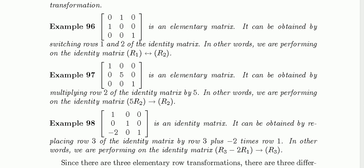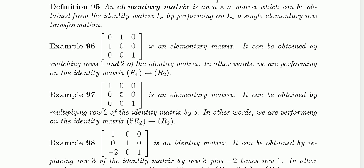Let us begin with the definition of an elementary matrix. An elementary matrix is an n by n matrix which can be obtained from the identity matrix I_n by performing on the identity a single elementary row transformation.